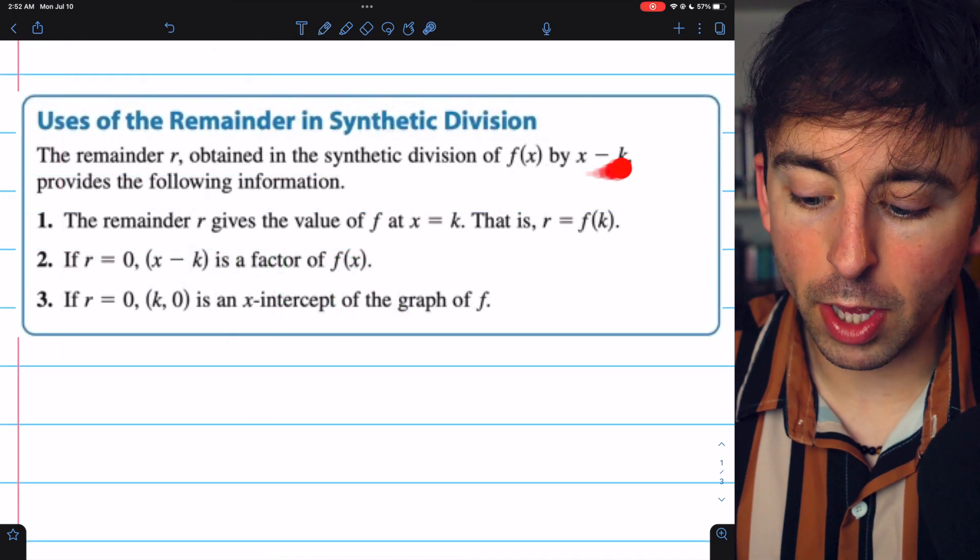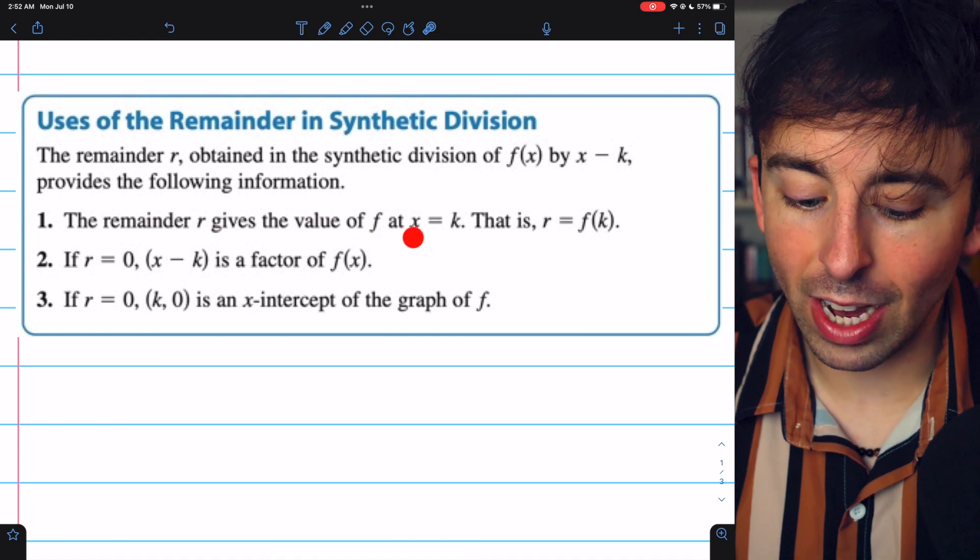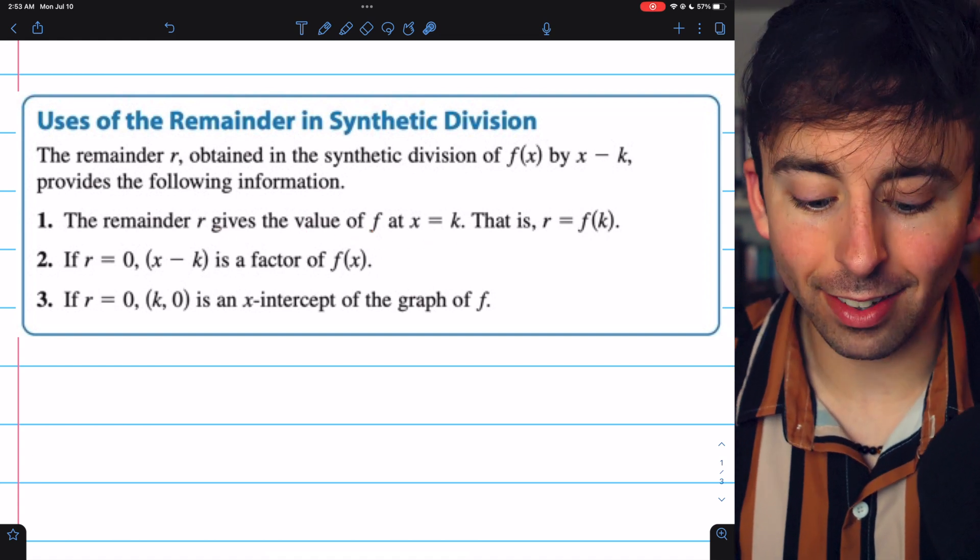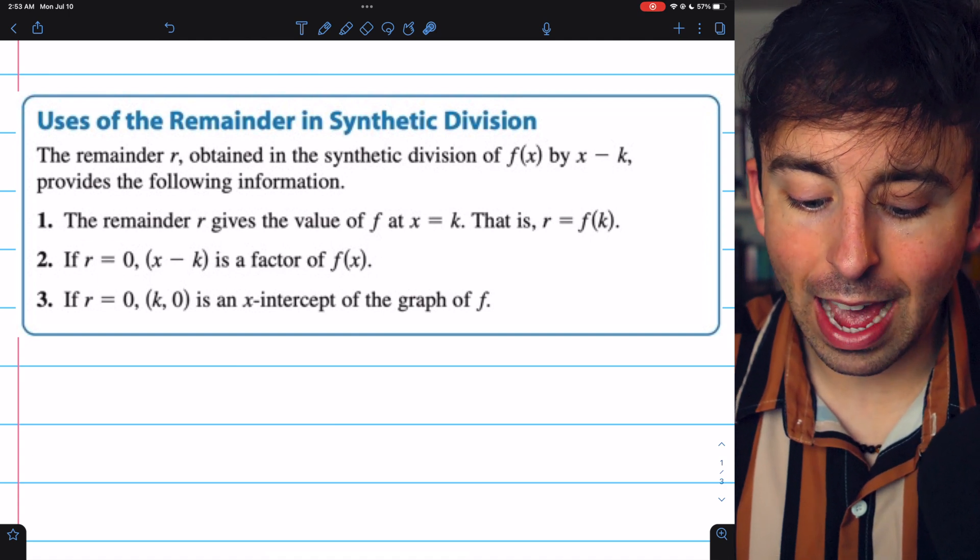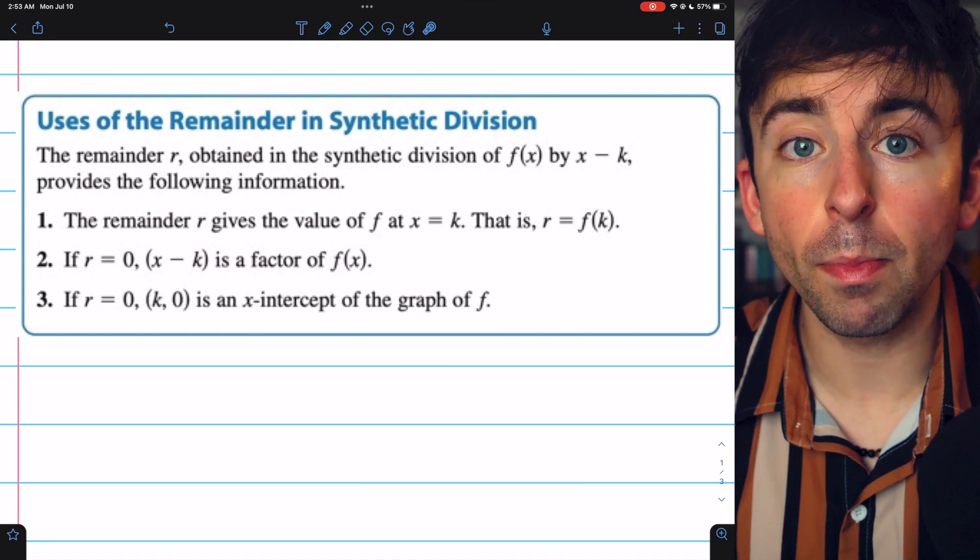So like we said, if we divide a polynomial by x minus k, the remainder is the value of the function at x equals k. Although a particularly interesting case is when the remainder is 0, because that would tell us that x minus k must be a factor of the polynomial.